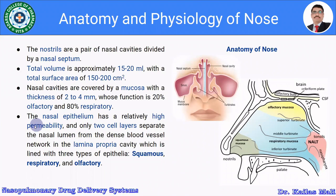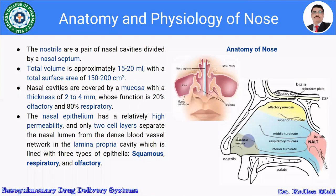Nasal cavities are covered by a mucosa with a thickness of 2 to 4 mm, whose function is 20 percent olfactory and 80 percent respiratory. The nasal epithelium has a relatively high permeability, and only two cell layers separate the nasal lumen from the dense blood vessel network in the lamina propria. The cavity is lined with three types of epithelia: squamous mucosa, respiratory mucosa, and olfactory mucosa.